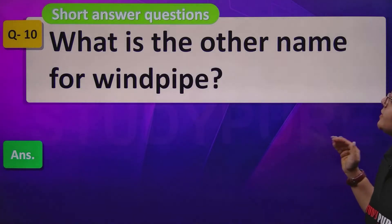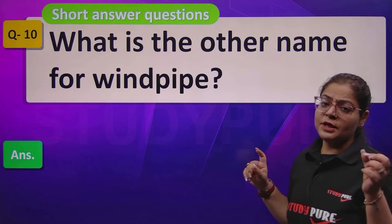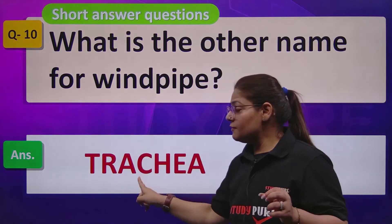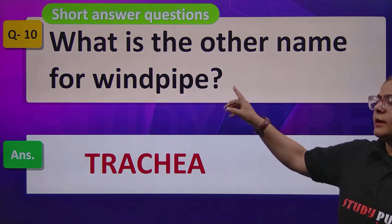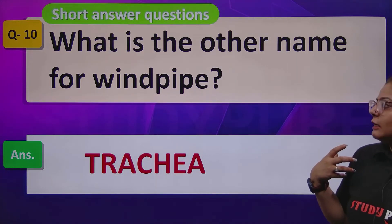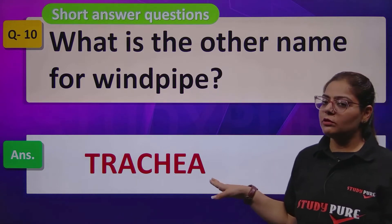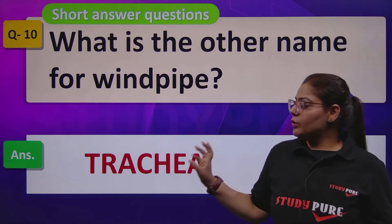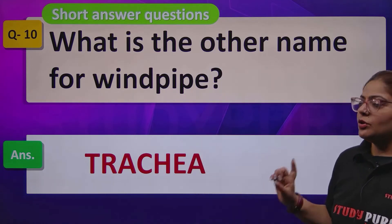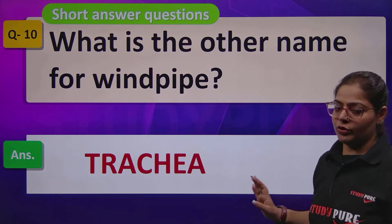What is the other name for the windpipe? When we initially discussed respiratory parts, we gave the windpipe another name — it is called the trachea. In scientific terminology, the windpipe is the trachea. So everybody should know windpipe and trachea are the same.